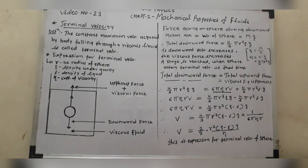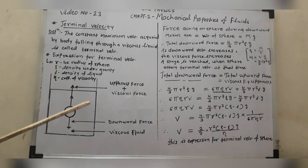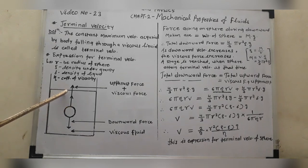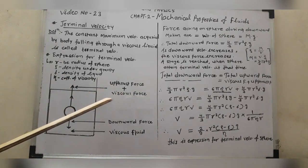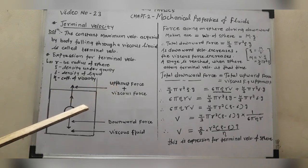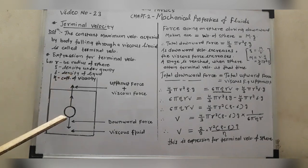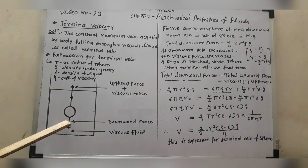For that purpose we have to consider the diagram. As shown in figure, this is the viscous liquid and this is the small sphere falling through this viscous medium. There are two types of forces acting on the sphere: the total upward force, which equals the upthrust force plus the viscous force. At terminal velocity, these forces are balanced — the total upward force is equivalent to the total downward force.